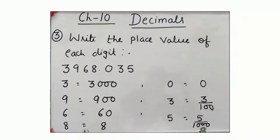Now, look at question number 3. Write the place value of each digit. 3968.035. 3 is at 1000 place, so the place value of 3 will be 3000. 9 is at 100 place, so the place value of 9 will be 900. 6 is at 10th place, so the place value of 6 will be 60. 8 is at 1's place, so the place value of 8 is 8.